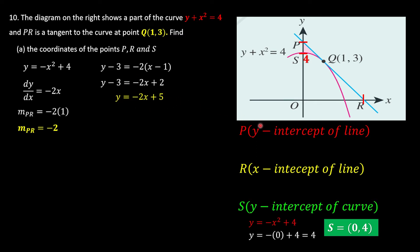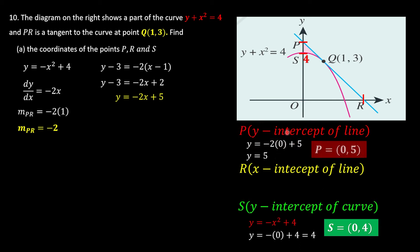Now we can find the y-intercept and x-intercept of the line. For the y-intercept, we set x = 0, giving y = 5. So the coordinate of P is (0, 5).